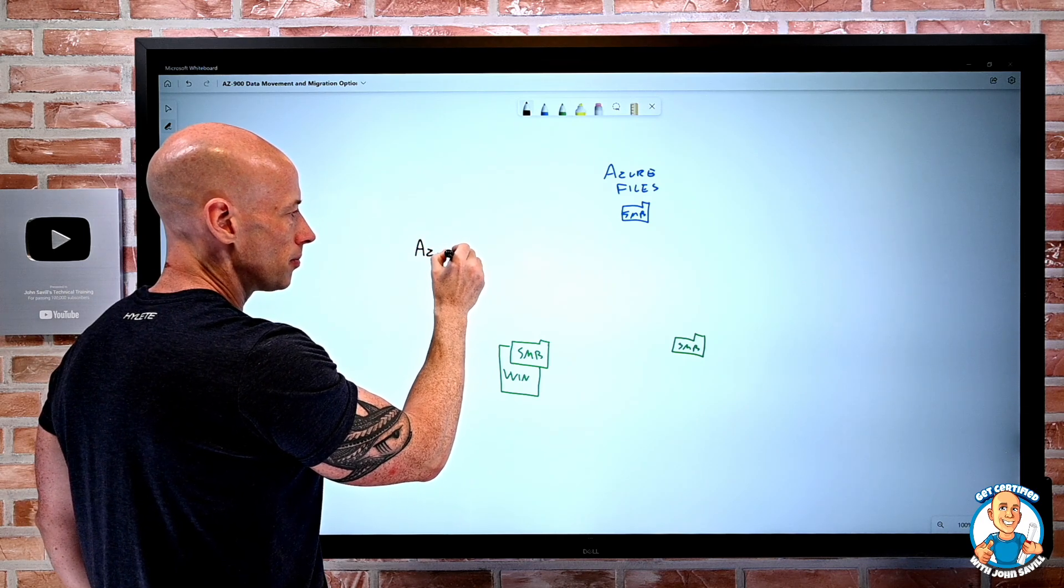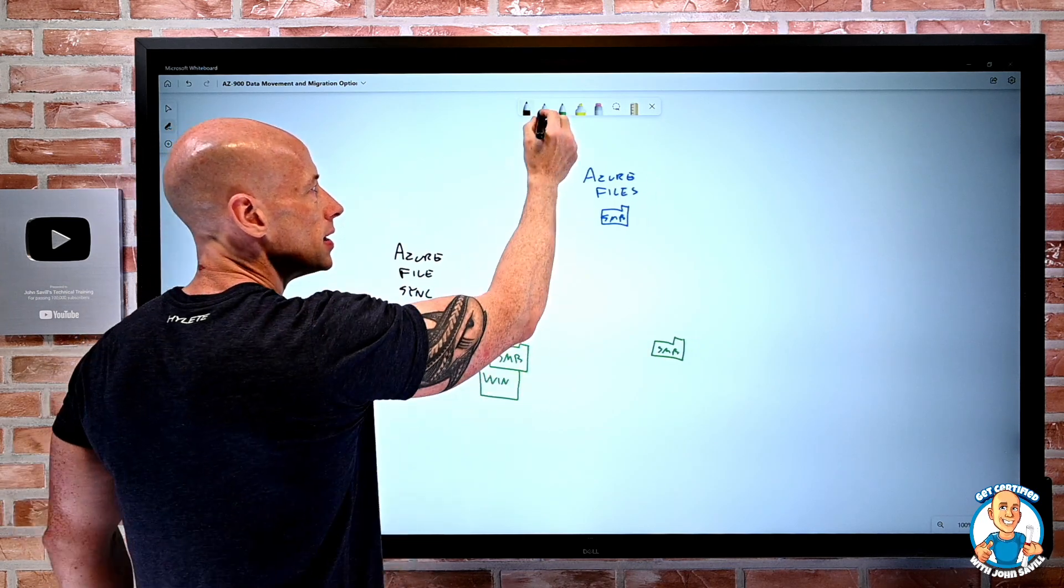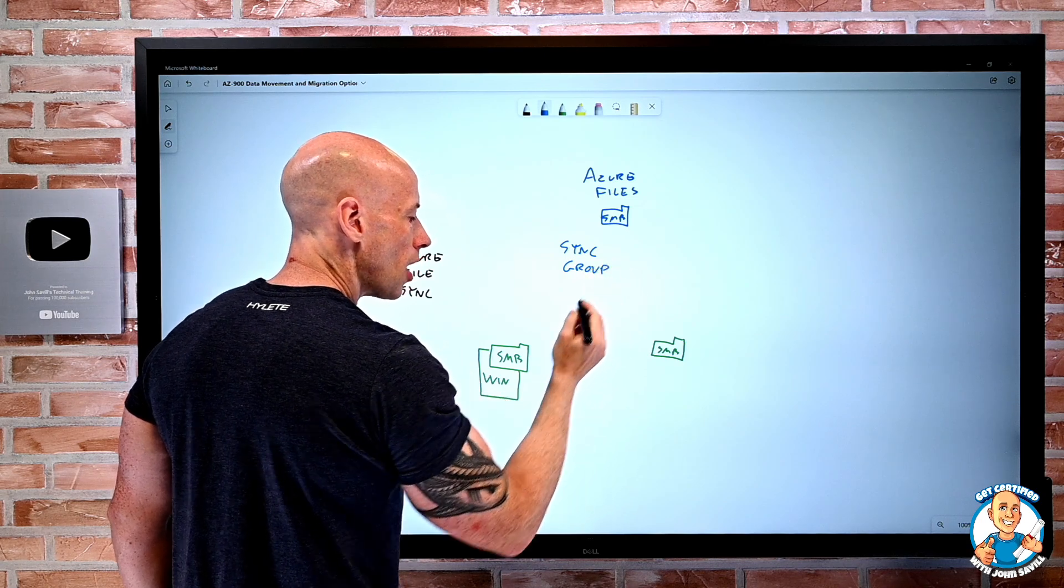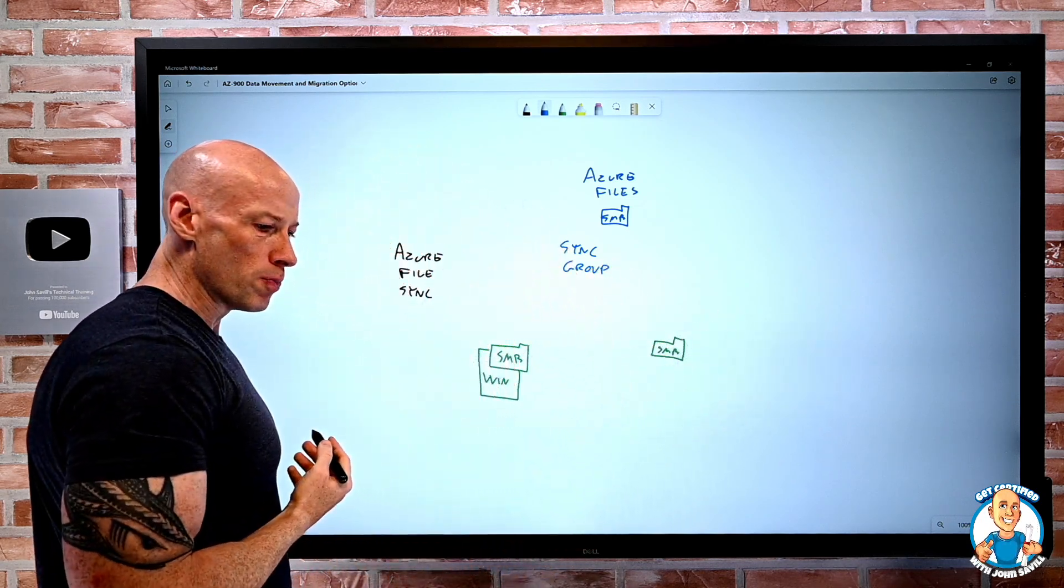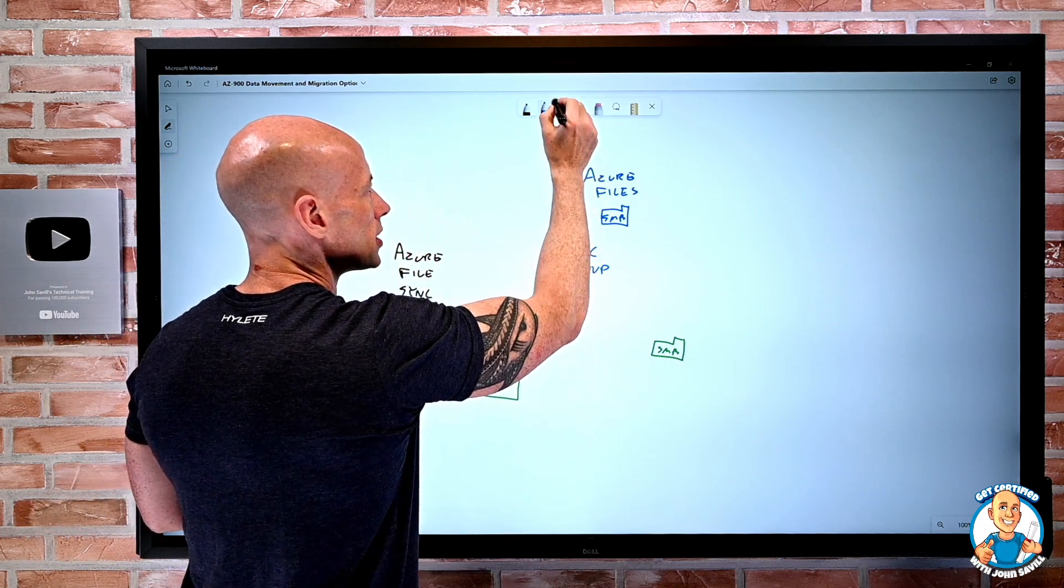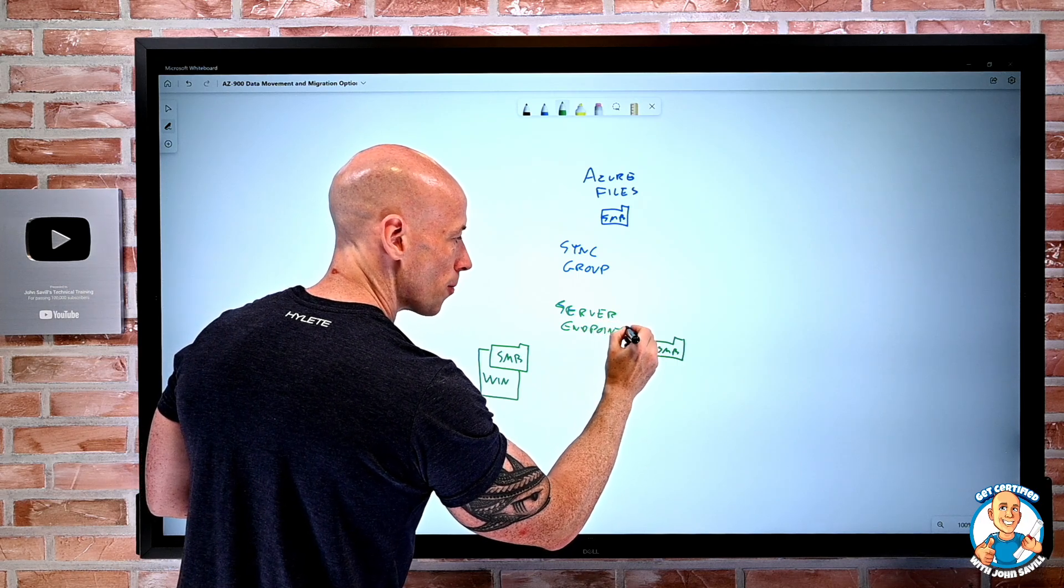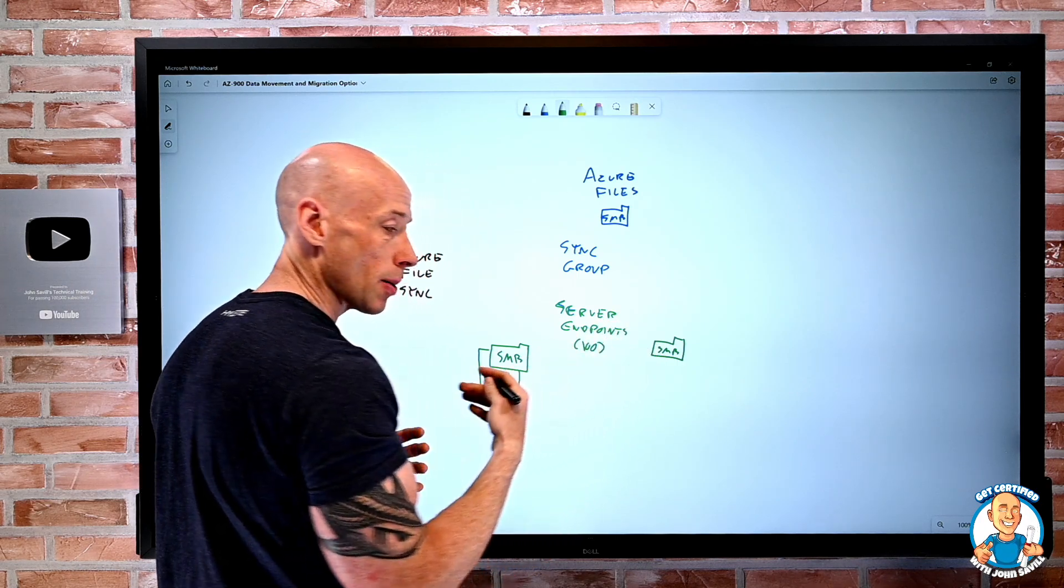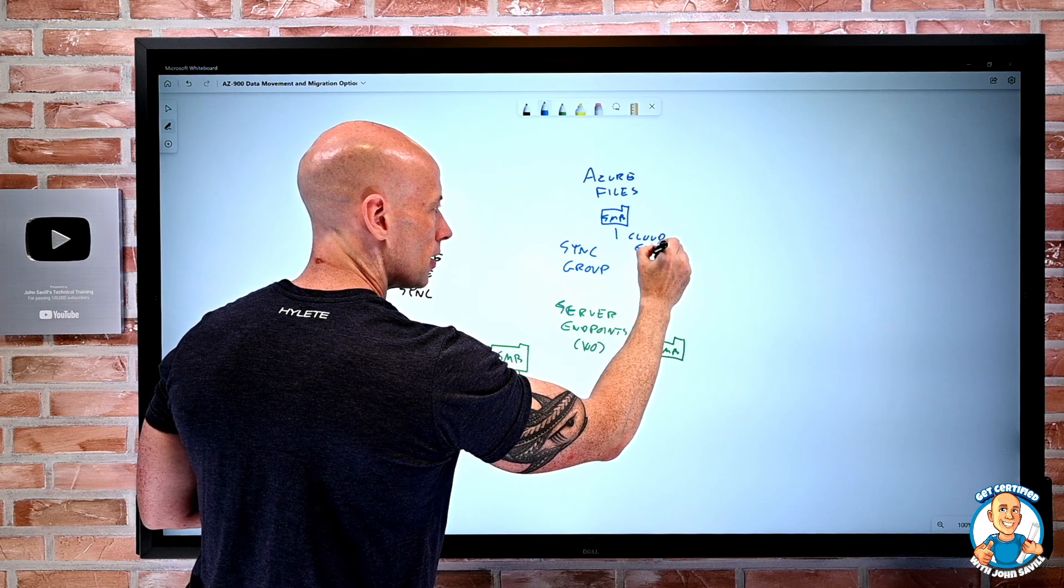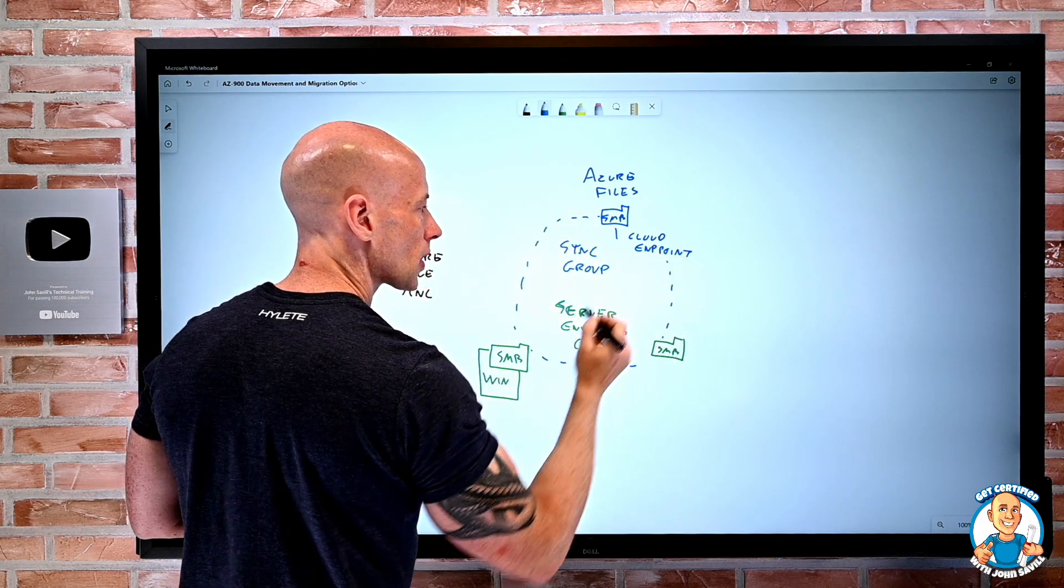And what I have here is the ability to create a sync group. I register the servers with the sync group. I believe I can have up to 100 of these server endpoints, which are Windows server-based file servers. I can have one cloud endpoint. And I put these into this sync group.